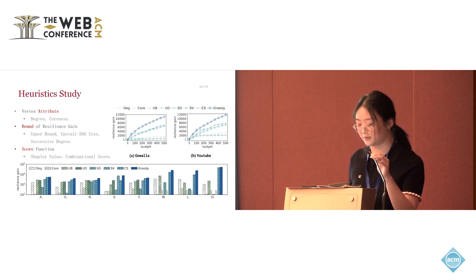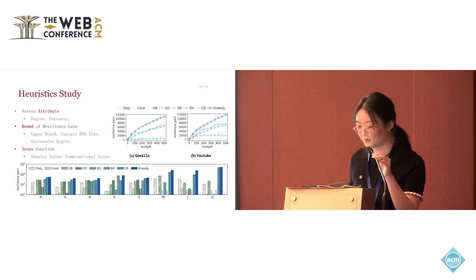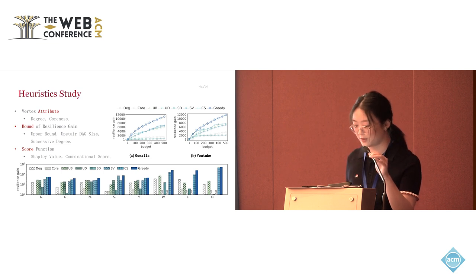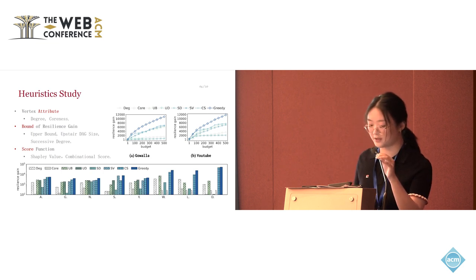We can select the anchor vertex by their degree and by their coreness values. The second category is the boundaries of resilience gain, including upper bound, upstairs deck size, and sensitive degree. This category is based on the idea that we estimate the exact resilience gain because the exact computation of the resilience gain is very time consuming. The third category is called score function, including shapley failure and the combination score. We can see that the greedy approach consistently yielded the best results, especially when the budget is relatively large.